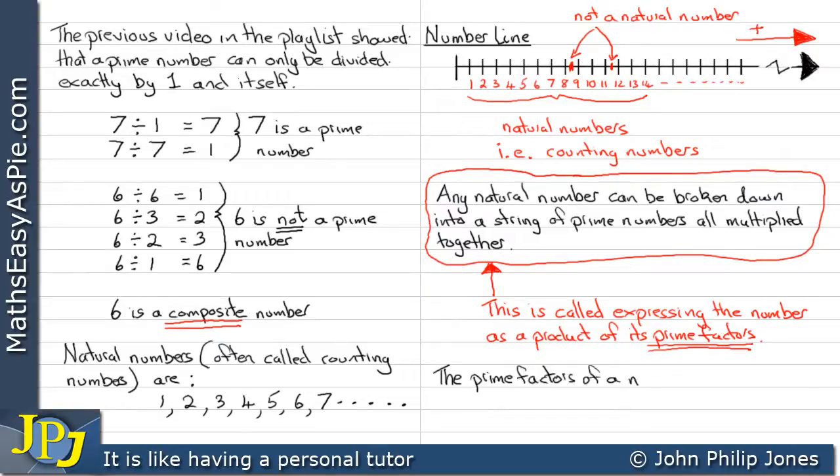The prime factors of a number can be found using a factor tree. Express 280 as a product of prime factors. We start by writing down the 280 and finding two numbers that, when multiplied together, give us 280.